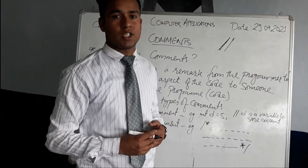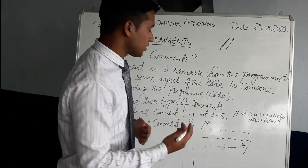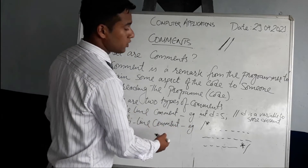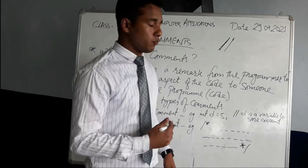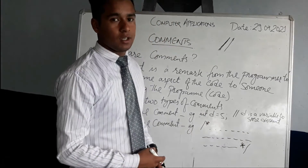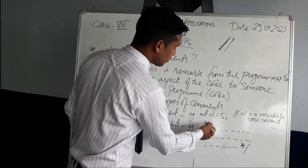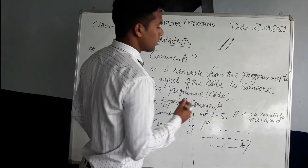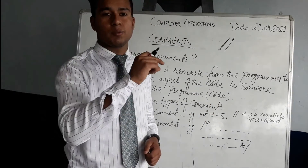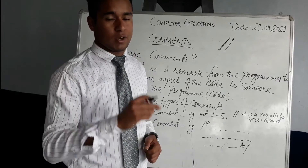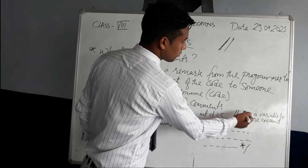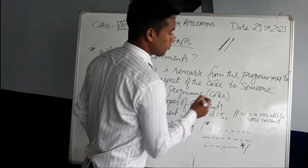The second kind of comment is called a multi-line comment. A multi-line comment is written in more than one line, and the symbol used for multi-line is different from the single-line comment. A single-line comment means the comment is written in one single line only, and for that the double forward slash symbol is used.